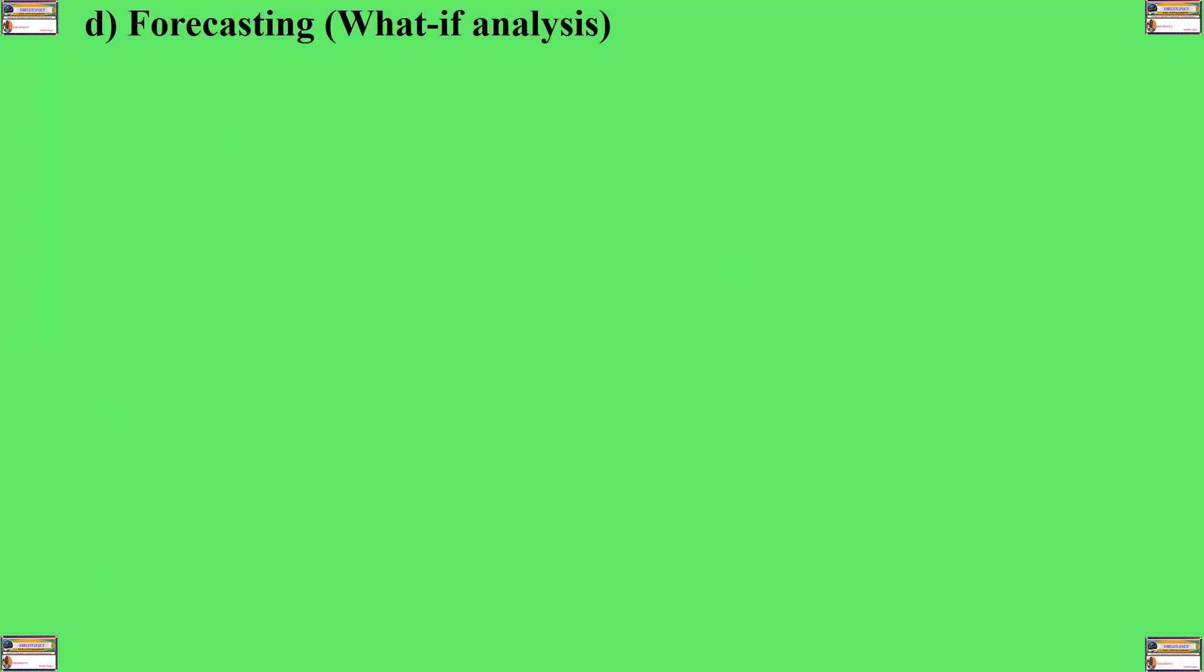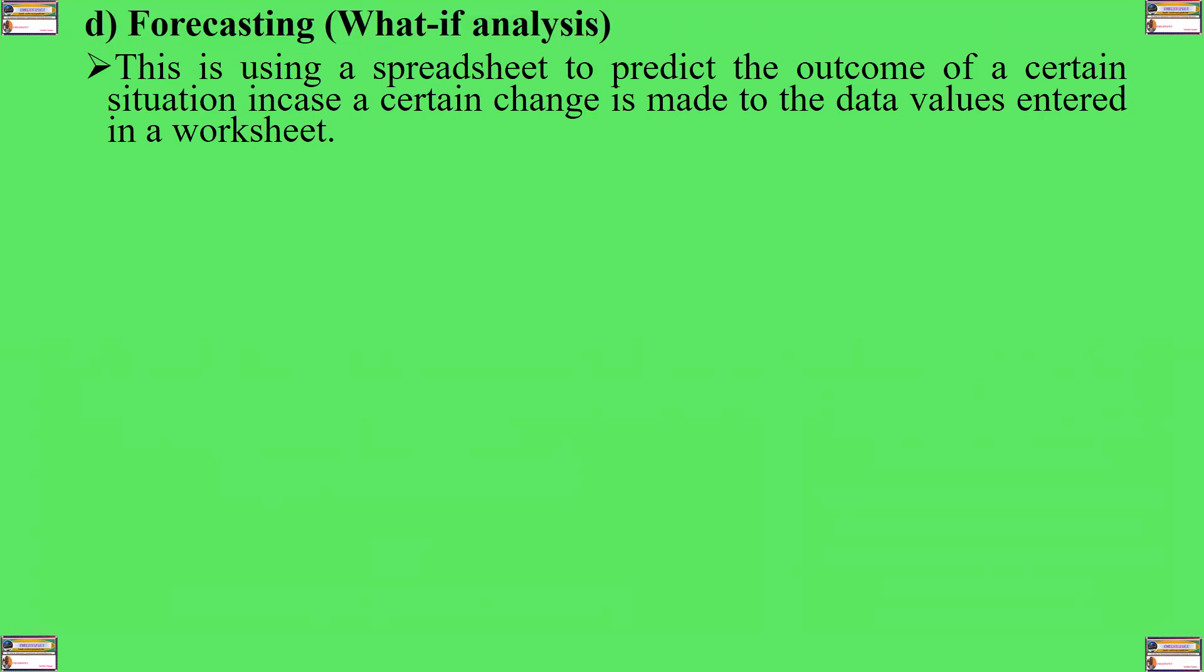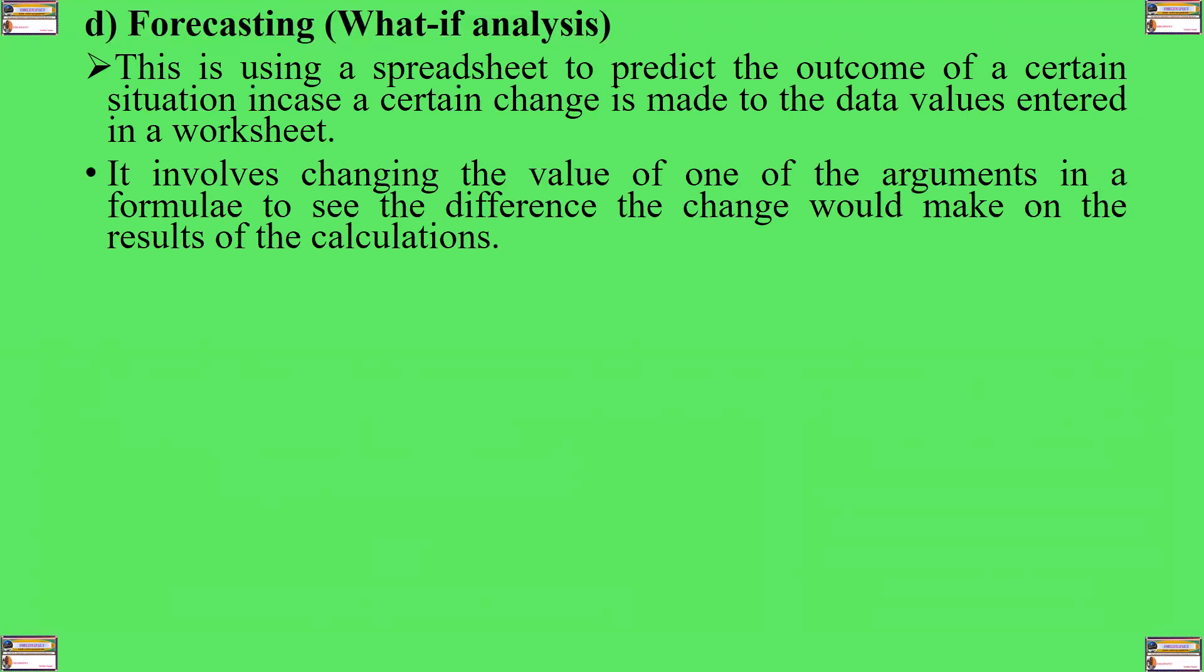The fourth application is forecasting, or what we call what-if analysis. This is using a spreadsheet to predict the outcome of a certain situation in case a certain change is made to the data values entered in a worksheet. It involves changing the value of one of the arguments in a formula to see the difference that the change would make on the results of the calculations.